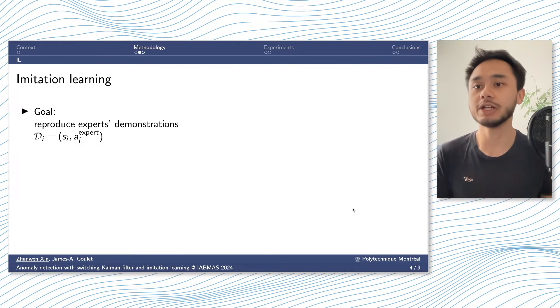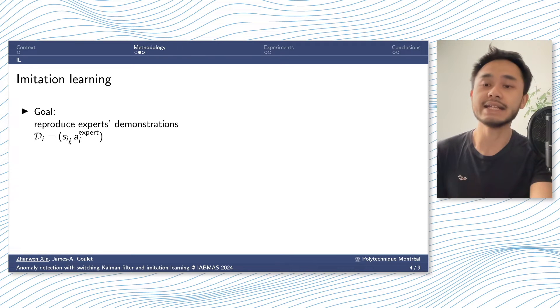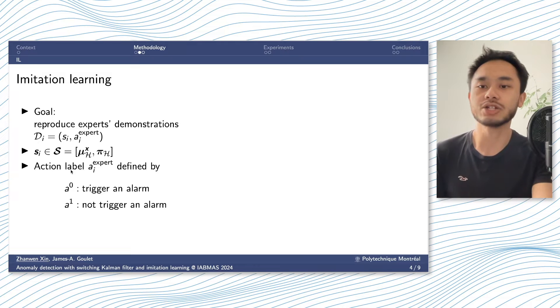So what is imitation learning? The goal of it is to reproduce experts' demonstration. Each demonstration is defined as a pair of states and action. The state in this study is defined as the mean value of the hidden state over a time history, as well as the pi probability of region switch over a time history. And the action given by the experts, or in practice given by an engineer or an inspector, they are defined by either triggering alarm or not.